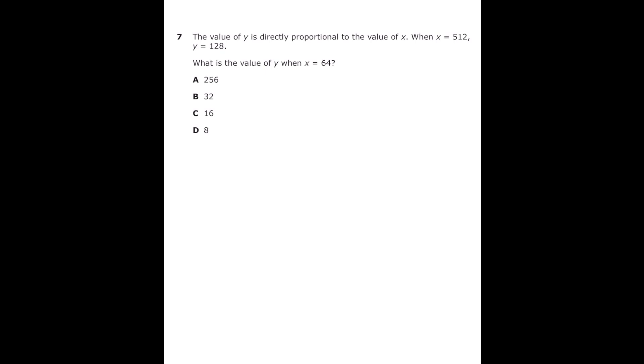I'm going to keep my y value on top and my x value on bottom. So I'm going to start with what they give us. I'm going to put 128 on top and 512 on bottom and set that equal to y over 64. And now I can just cross multiply and divide. So 128 times 64 equals 8,192, and then divided by 512, that equals 16, which is letter C.